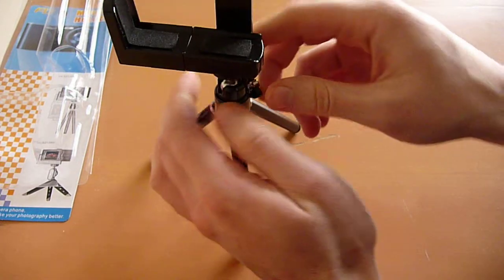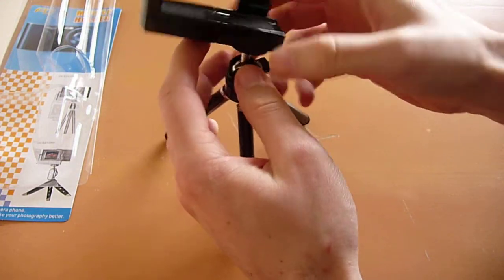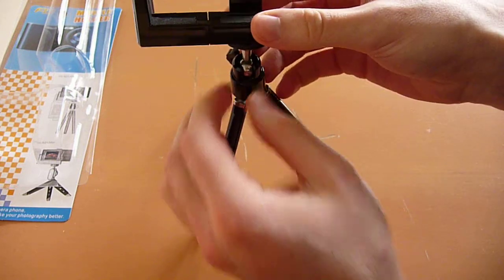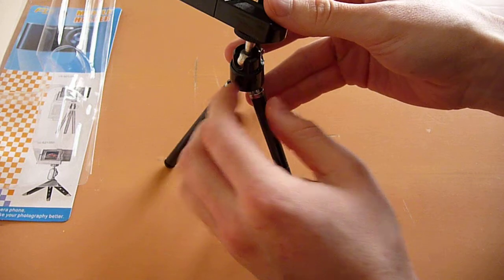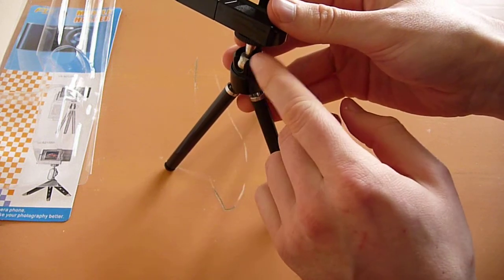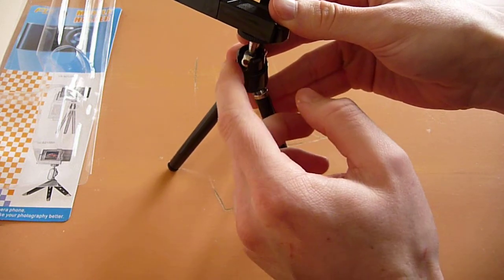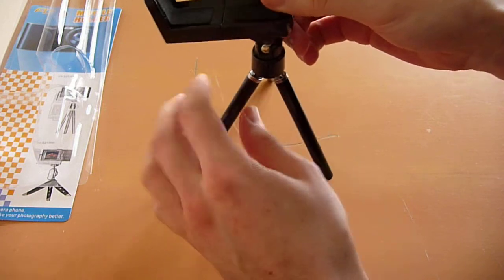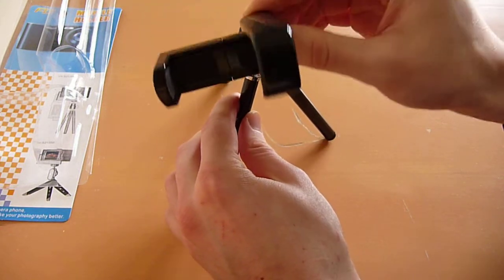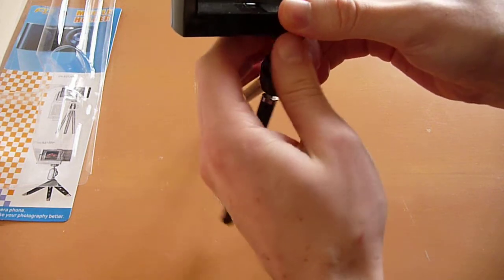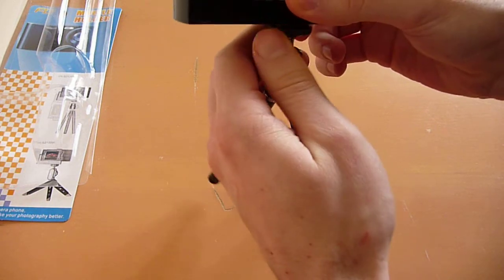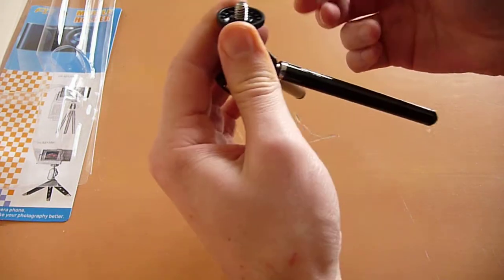Like this. It has a screw here, it's pretty much like a mini tripod. You can adjust it any way you want. It has a small cutout here for like a really angled recording.